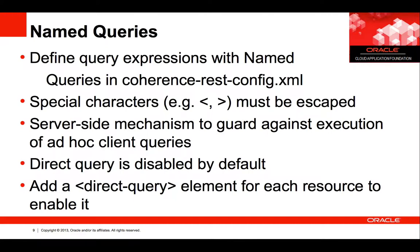Named queries. This feature allows you to define query expressions with named queries for a resource in the Coherence REST config.xml file. Since the query expression is in an XML file, any special characters such as less than or greater than must be escaped using the corresponding entity. This feature provides a server-side mechanism to guard against execution of ad-hoc client queries and gives you complete control of the queries allowed against your cache. By default, direct query is disabled; to enable it, you need to add a direct query element for each resource and set the enabled attribute to true.